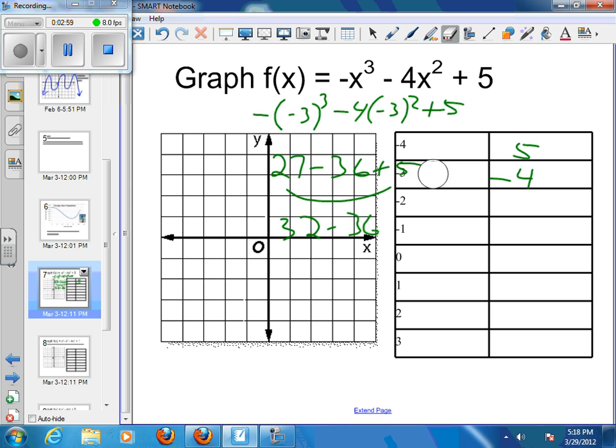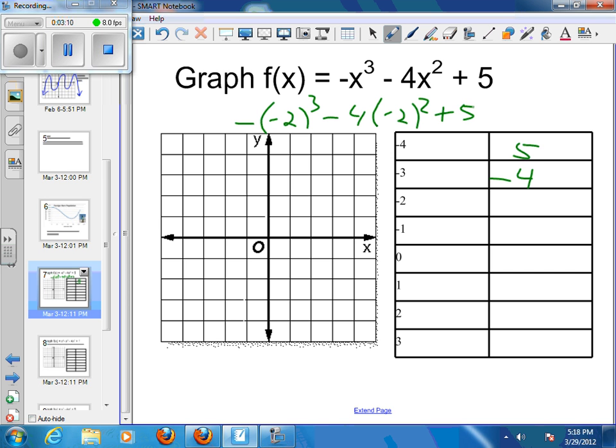Moving down to the next number, I plug in my negative 2 into this. So that's a negative, negative 2 cubed minus 4 times negative 2 squared plus 5. Negative 2 cubed, that's 2 times 2 is 4, times 2 is 8. And then I've got my double negative, so that's a positive 8. So negative 2 squared is a positive 4, positive 4 times a negative 4 is a negative 16, and then plus 5. So then again, I take my 5 and my 8, and I get a 13 minus 16, which gives me a negative 3.